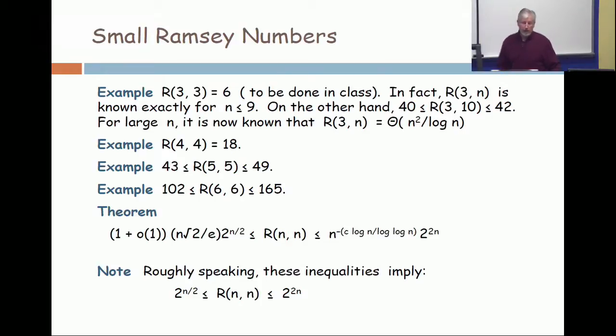Of course, actually much more is known. r(6,6) is narrowed quite a bit. But for large n, for large n, the bounds that are known are between 2 to the 2n and 2 to the n over 2.